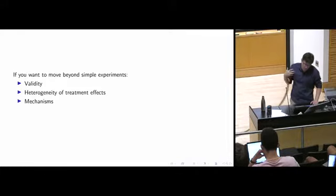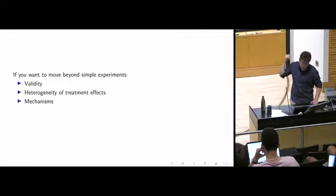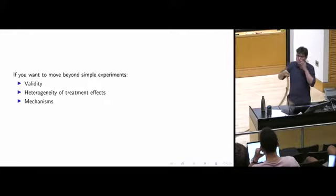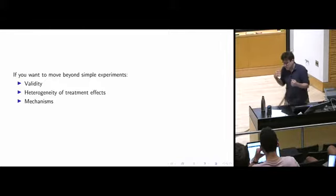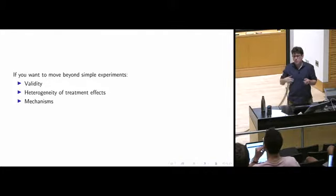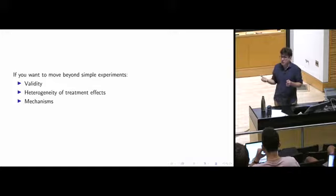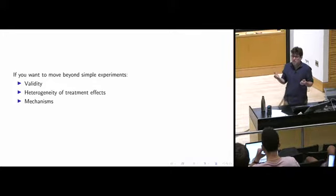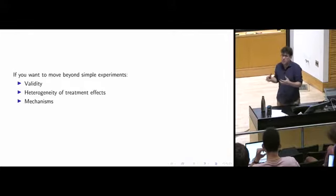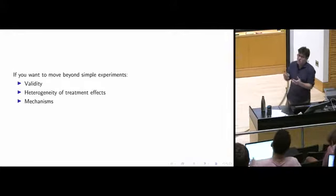If you want to move beyond simple experiments, think about three ideas: validity, heterogeneity of treatment effects, and mechanisms. Heterogeneity of treatment effects means the same treatment has a different effect on different people as a function of their pre-existing characteristics. Mechanism is the process through which the treatment leads to a certain effect — like limes prevent scurvy and the mechanism is vitamin C. If we understand the mechanism, we can amplify it and design treatments that focus on it even more.